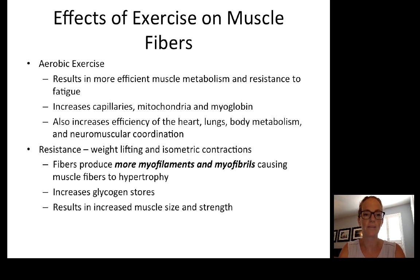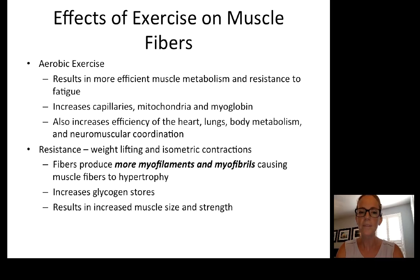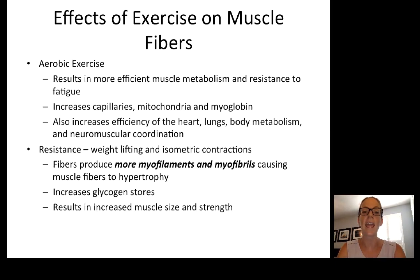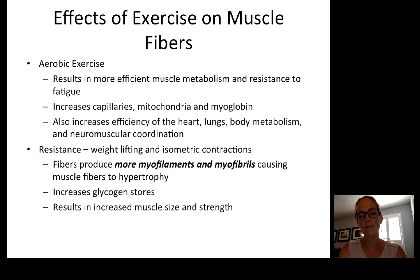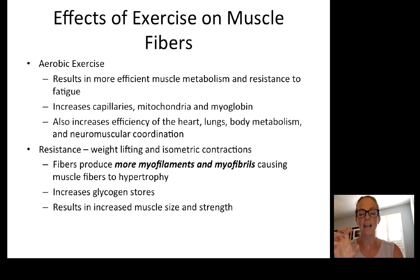Aerobic exercise results in more efficient muscle metabolism, resistance to fatigue, and increases capillaries, mitochondria, and myoglobin. It also increases the efficiency of the heart, lungs, general body metabolism, and muscular coordination. Resistance exercise — weight lifting and isometric contractions with heavy loads — produces more myofilaments and myofibrils, causing hypertrophy. This increases glycogen stores and muscle size and strength. Remember: you can't get more muscle cells — that's developmental. You can only get bigger muscle cells by packing them full of actin and myosin protein.